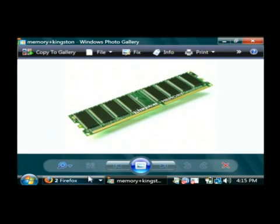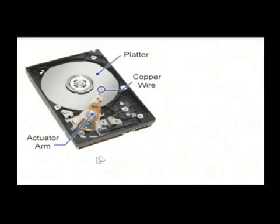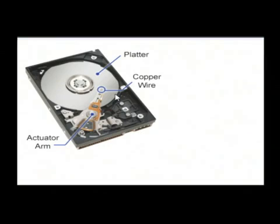The way that computers store data more permanently is through a hard drive. I'm going to pull up this picture of a hard drive right here. Hard drives have spinning platters inside of them. A hard drive stores data magnetically, basically like a reel of tape, except it's flat.